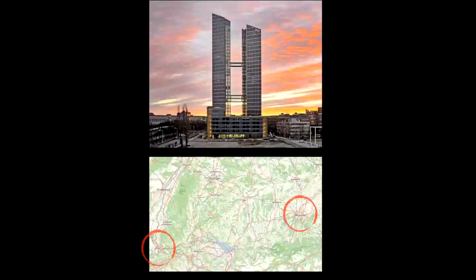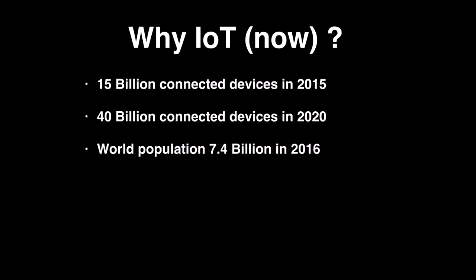I work for IBM, specifically the IBM Watson IoT business unit. Our headquarters outside the US is in Munich, and I'm in Basel, Switzerland. So why are we talking about IoT? Currently we have 15 billion connected IoT devices, and it is predicted that by 2020 we will have 40 billion — multiple IoT devices per person on the planet.